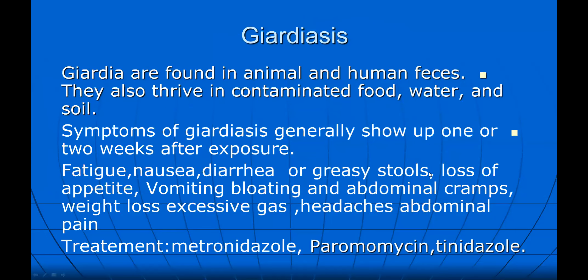Giardiasis is found in animals and human species, and also thrives in contaminated food, water and soil. The symptoms generally show up one or more weeks after exposure. Symptoms include fatigue, nausea, diarrhea, greasy stool, loss of appetite, vomiting, bloating in the stomach, abdominal cramps, weight loss, excessive gas, headache and abdominal pain. Treatment is metronidazole, paromomycin and tinidazole.